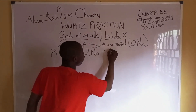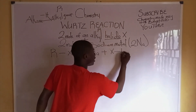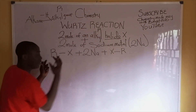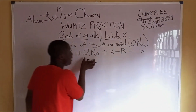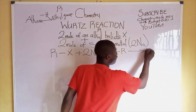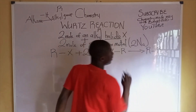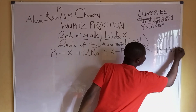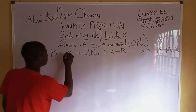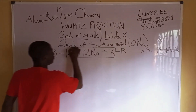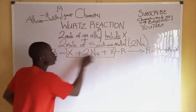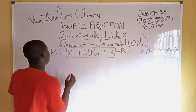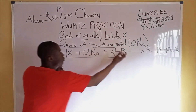Plus another mole of X-R, which is the alkyl group. Two moles of alkyl group react with sodium metal to form an alkane, plus sodium halide. The two atoms of the halogen combine with the two moles of sodium, while the two alkyl groups combine to form the alkane.